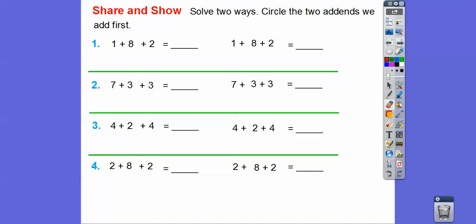All right, so this says solve two ways. Circle the two addends that we add first. Okay, what I'm going to do is add these two guys first. So I'm going to circle these. One plus eight is nine, and then we're left with nine plus two. Nine plus two gets us eleven right there. Now, we'll get eleven if we grouped these two guys together. Watch. Eight plus two equals ten. Okay, so one plus ten is also equal to eleven.